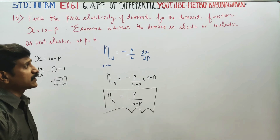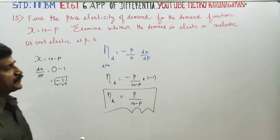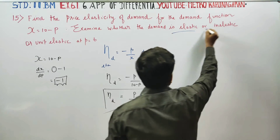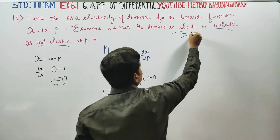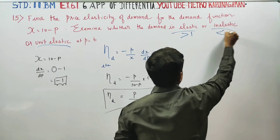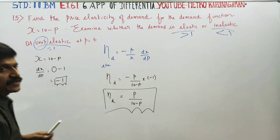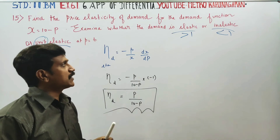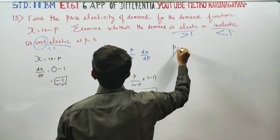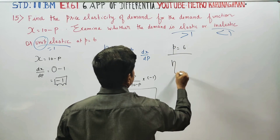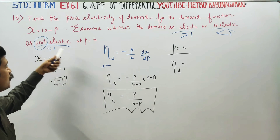Now we need to find the elasticity of demand. When p is equal to 6, is the demand elastic, inelastic, or unit elastic? Greater than 1 is elastic, less than 1 is inelastic, equal to 1 is unit elastic.